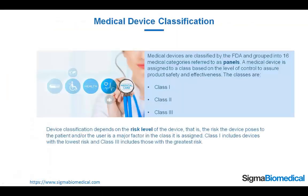Medical Device Classification. Medical devices are classified by the FDA and grouped into 16 medical categories, referred to as panels. A medical device is assigned to a class based on the level of control to assure product safety and effectiveness. The classes are Class 1, Class 2, and Class 3. Device classification depends on the risk level of the device — the risk the device poses to the patient and/or the user is a major factor in the class it is assigned. Class 1 includes devices with the lowest risk, and Class 3 includes those with the greatest risk.